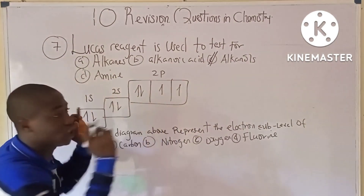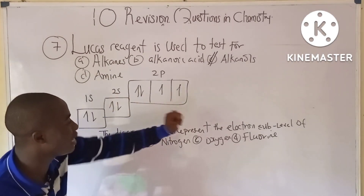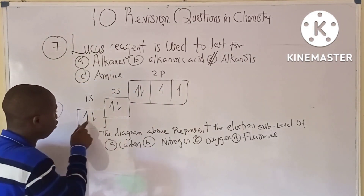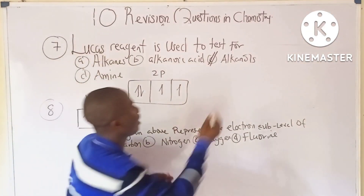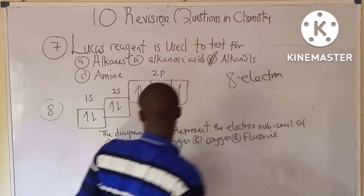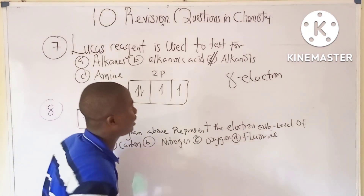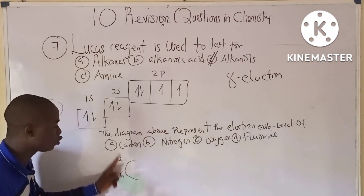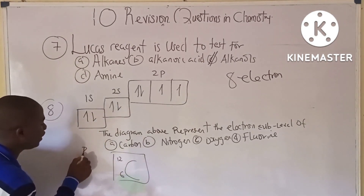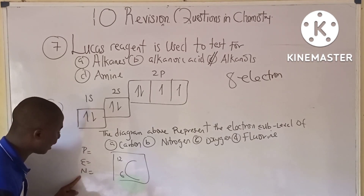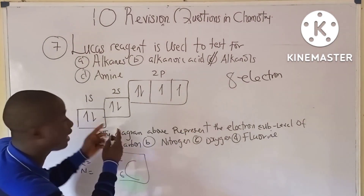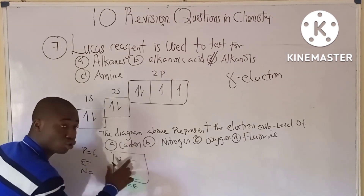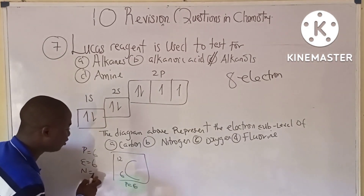Question eight: the diagram shows the electron sub-level of an unknown element. We count the electrons: 1, 2, 3, 4, 5, 6, 7, 8 — there are 8 electrons. Checking the options — carbon has atomic number 6, so its electron number is 6, which does not match.